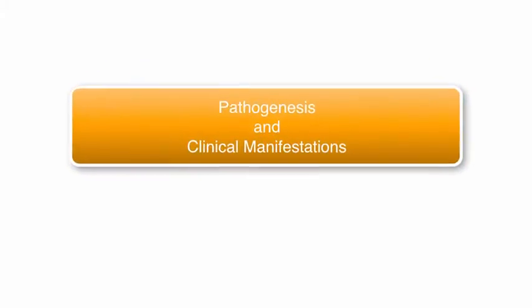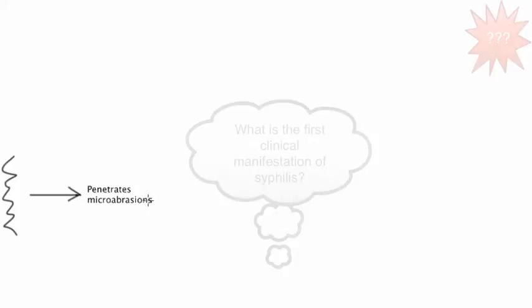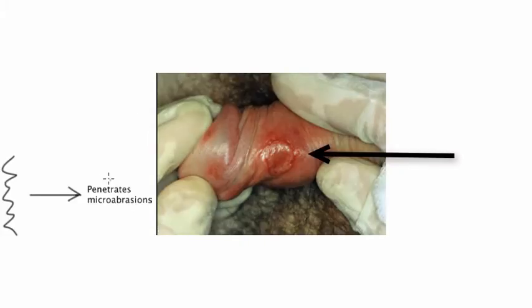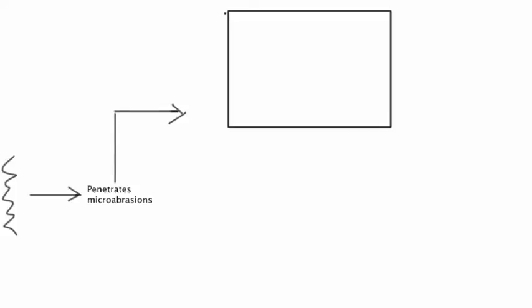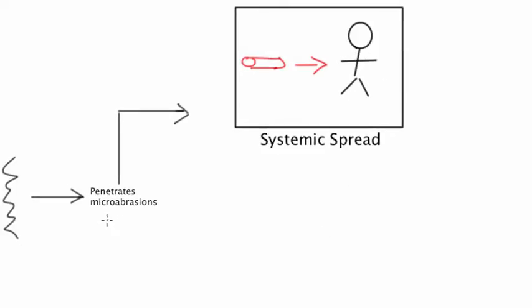Let's talk through the pathogenesis of syphilis infection, correlating it with clinical manifestations. Syphilis gains access to the body by penetrating micro-abrasions in the skin and mucous membranes. The first clinical manifestation is a primary lesion called a chancre. But importantly, long before a chancre starts forming, there is already ongoing systemic spread of the Treponema bacteria, which accesses the vasculature and lymphatic system, giving it access to the entire human body.